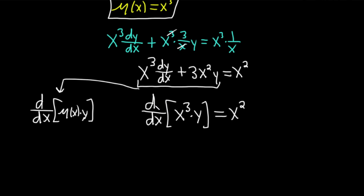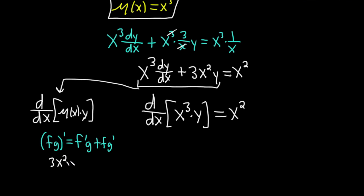As always, you should check. Recall the product rule: f times g gives derivative of the first times the second plus the first times the derivative of the second. In our case: derivative of x cubed times y, plus x cubed times dy/dx. Comparing with our differential equation, it's exactly what we have on the left hand side — it always works every single time.